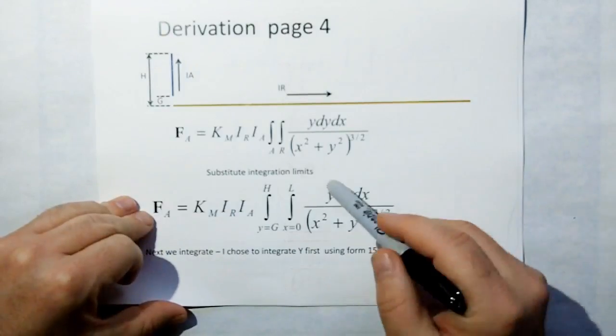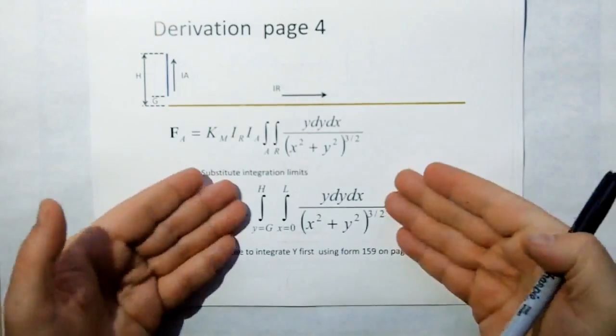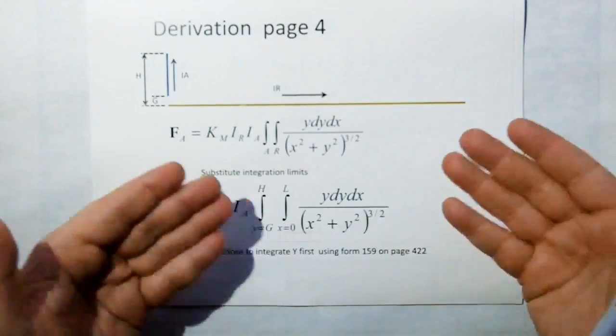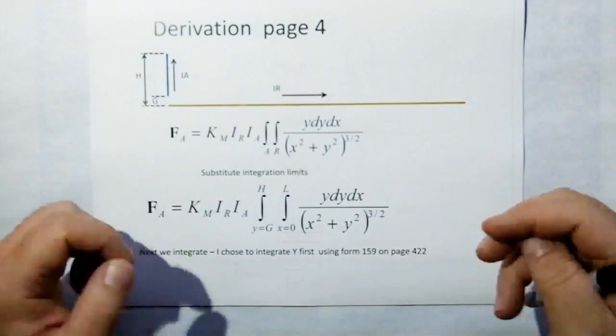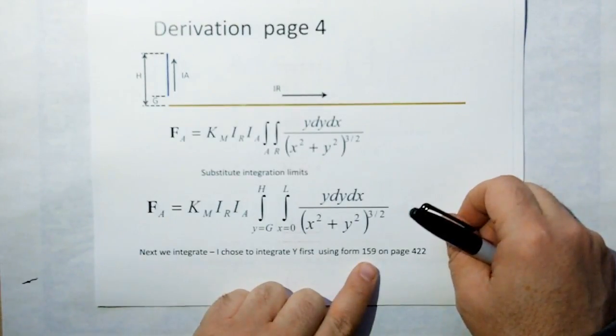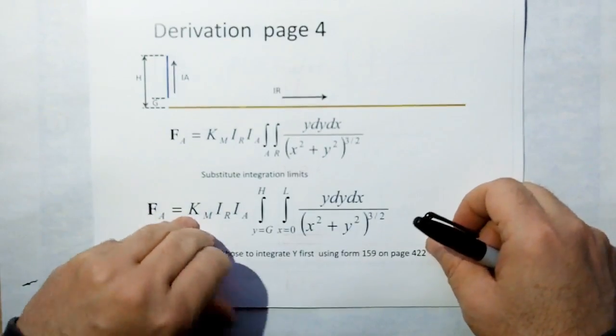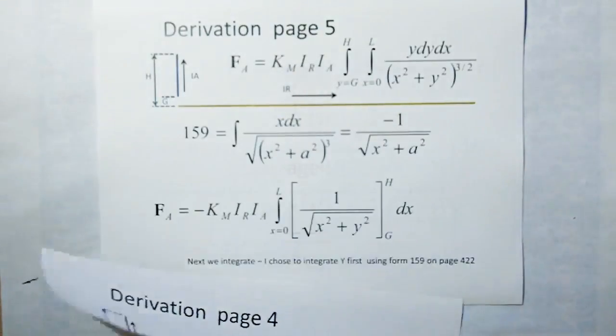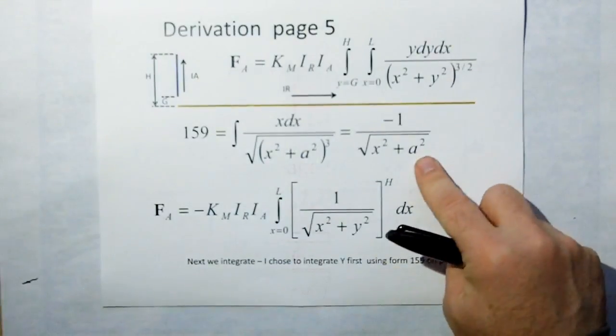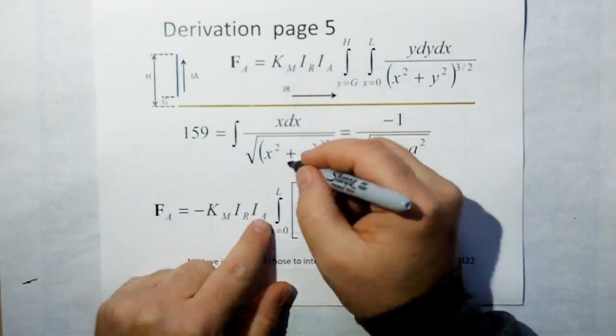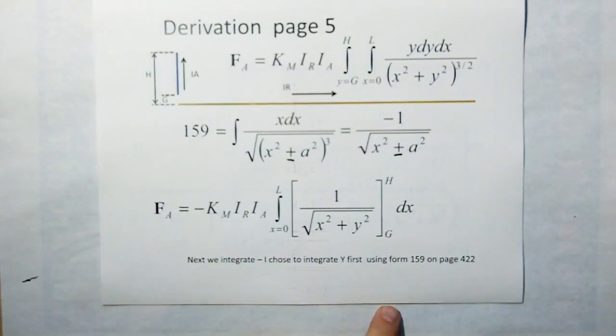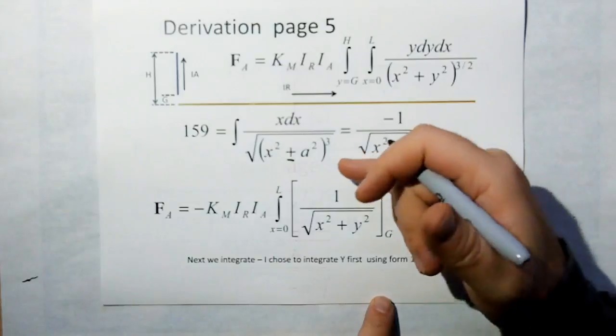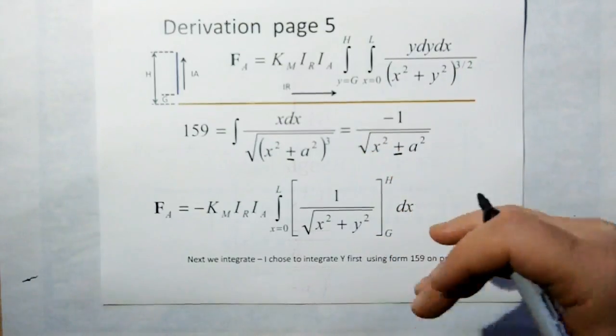Now I chose to integrate first with Y because this is a double integral. The order doesn't really matter here. I chose to integrate Y and what I have on page 159 of the chemical rubber Bible, form 159 on page 422, is what I use. That form has been copied here. I do believe there is a plus minus here that I forgot but that's okay. When we substitute this form into this we end up with this and we substitute the limits.